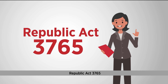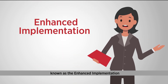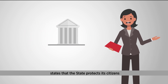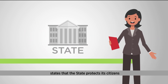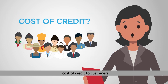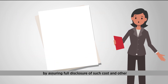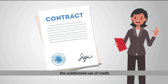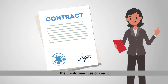Republic Act 3765, known as the Enhanced Implementation of the Truth in Lending Act, states that the state protects its citizens from the lack of awareness of the true cost of credit to customers by assuring full disclosure of such cost and other terms and conditions, with a view of preventing the uninformed use of credit.